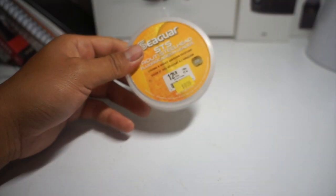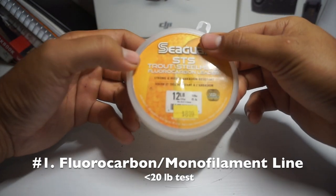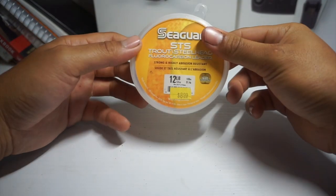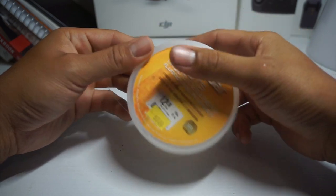First thing you're going to need is fluorocarbon line. Now this is different than monofilament and it's a lot more expensive. You can see $8.99 for 100 yards of this.